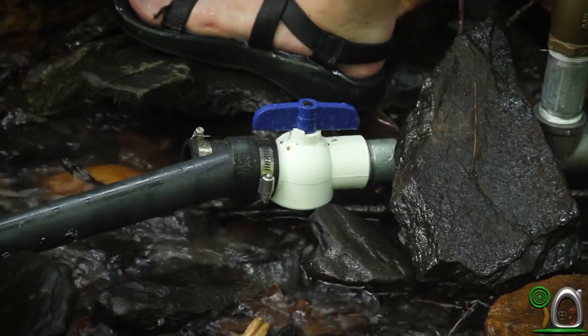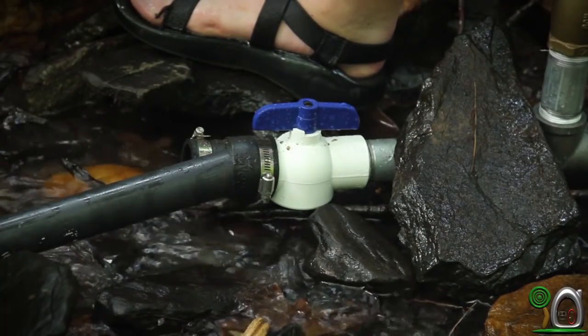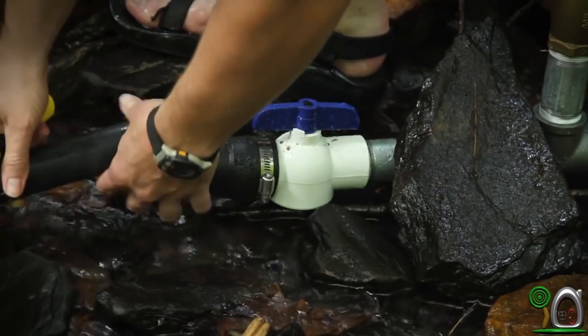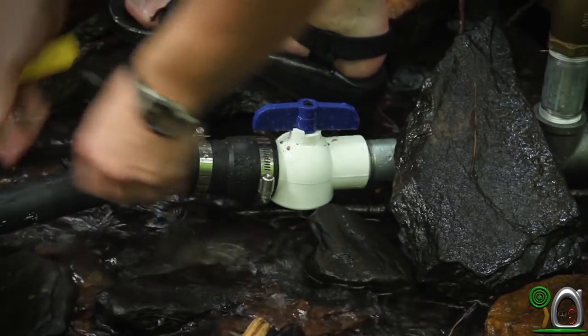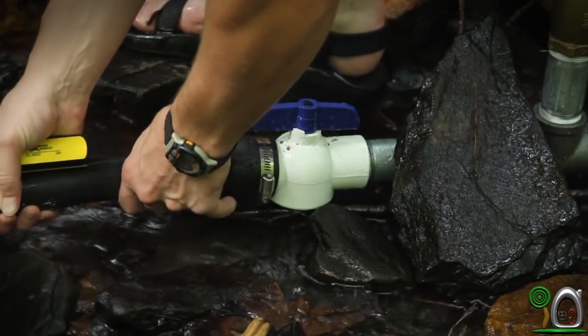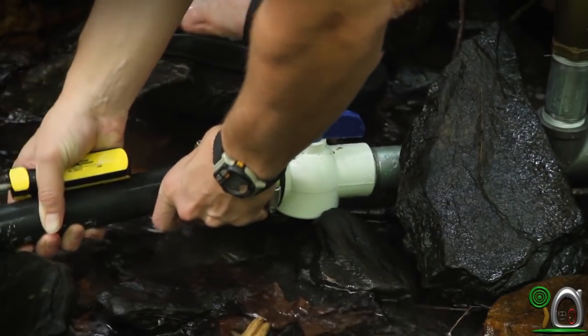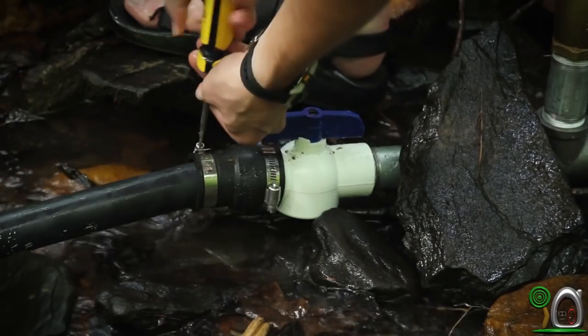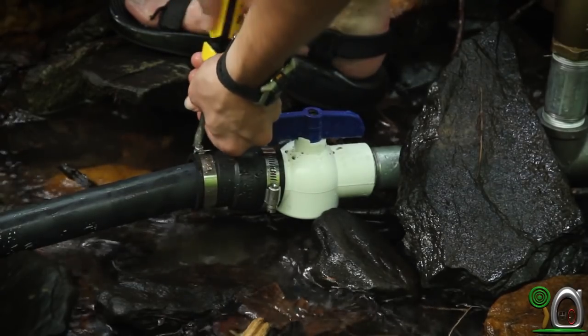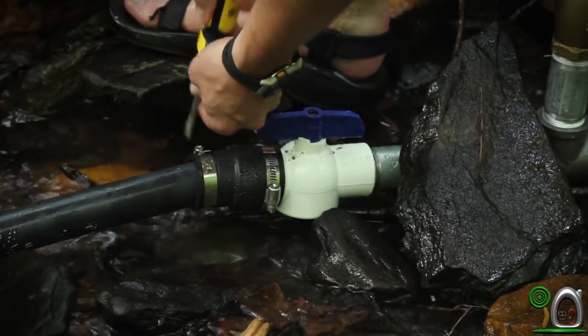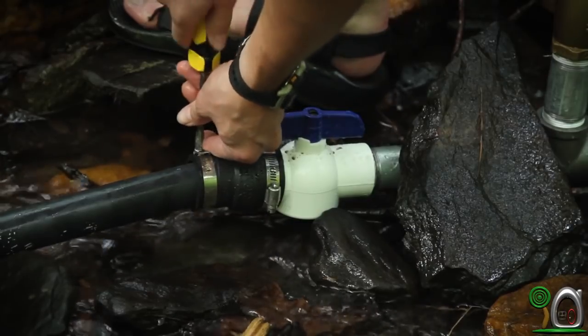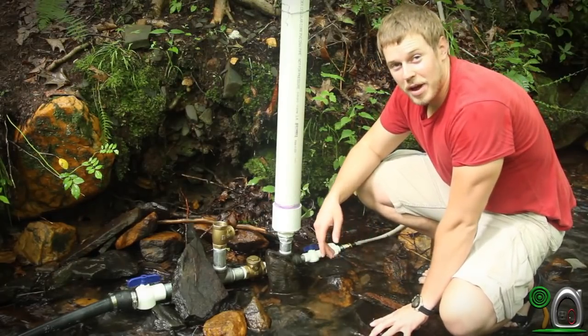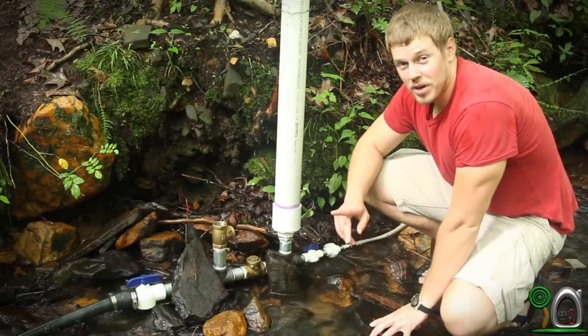Now it's time to attach the flex pipe to the pump. To do this, we're going to use a screwdriver and just make sure your pipe doesn't have any leaks on it, so it needs to be real tight. Alright, it's that easy to install your hydraulic ram pump, but now let's get it working.